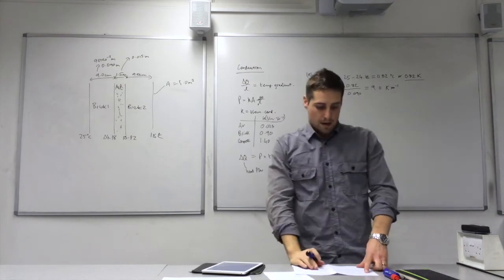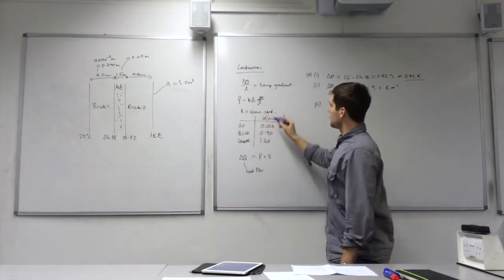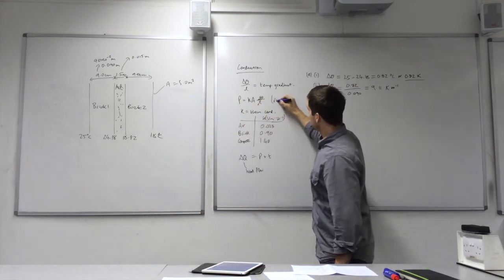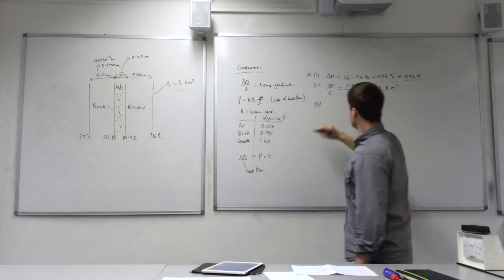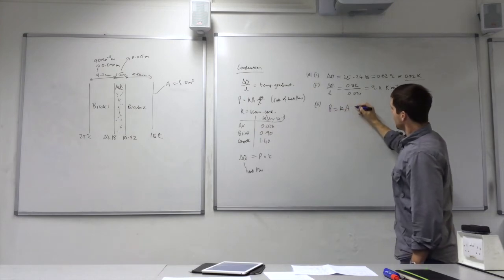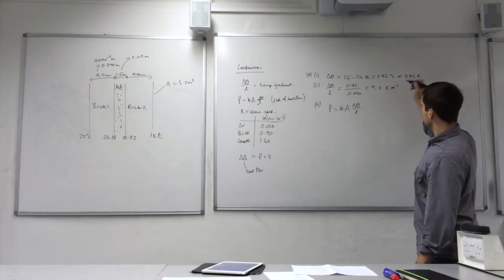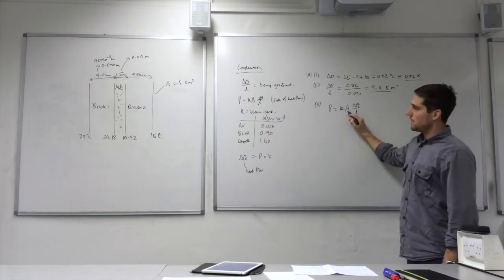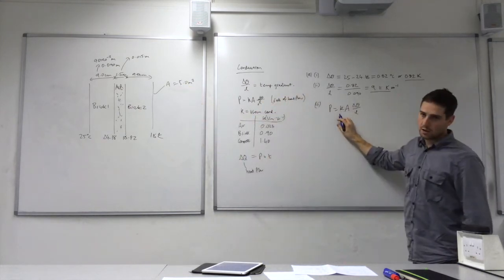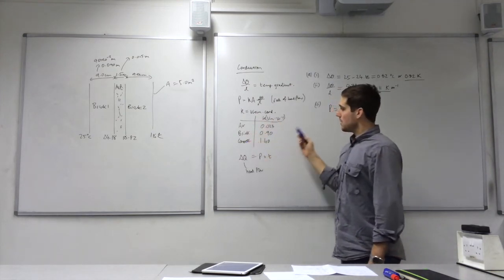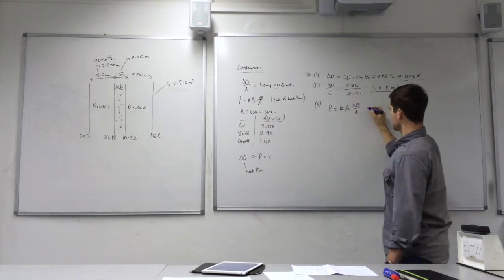Now, question 3. Calculate the rate of heat flow through brick 1. So we need to use this equation. This is our rate of heat flow here. This is the temperature gradient. We just calculated that. This is the area, which is over here. And then we have the thermal conductivity value, which we find from our table. We're using brick, so this is the value that we need, 0.90.